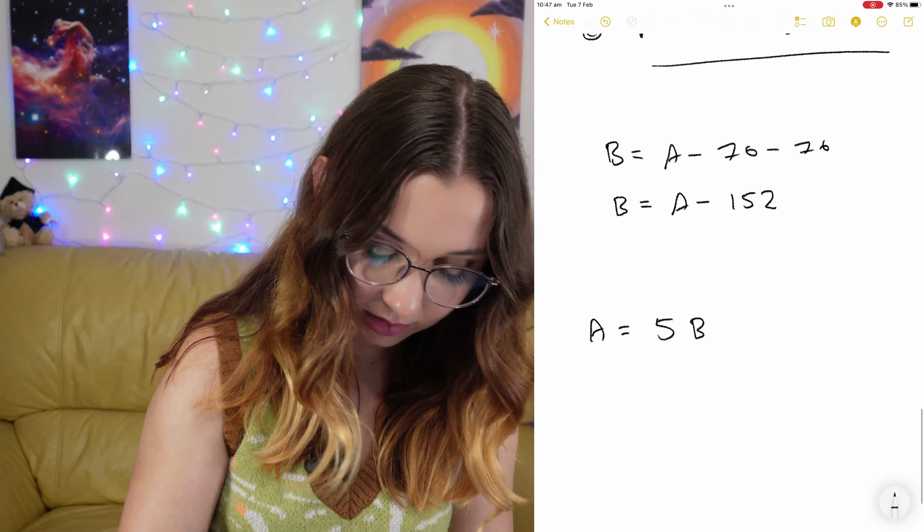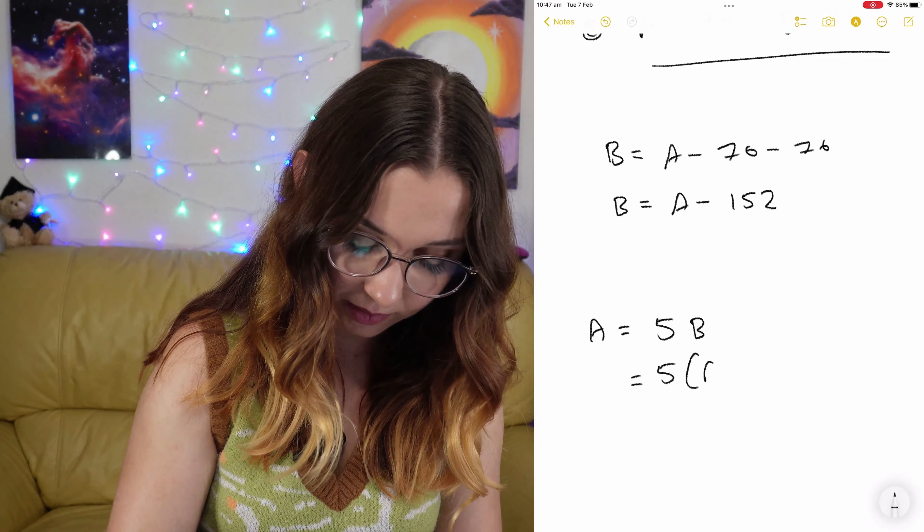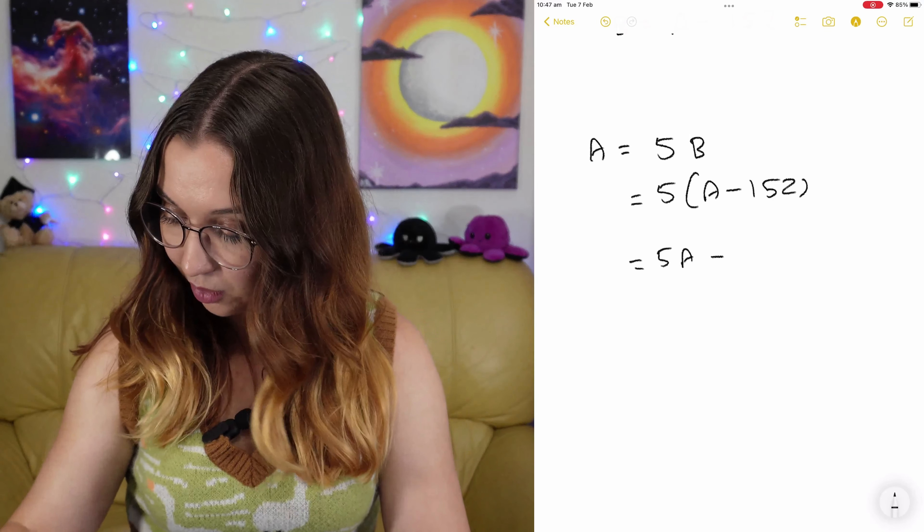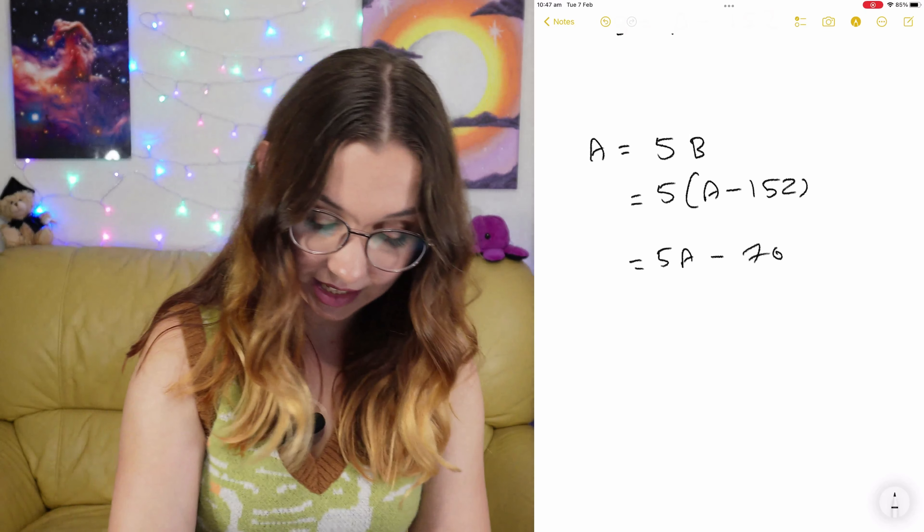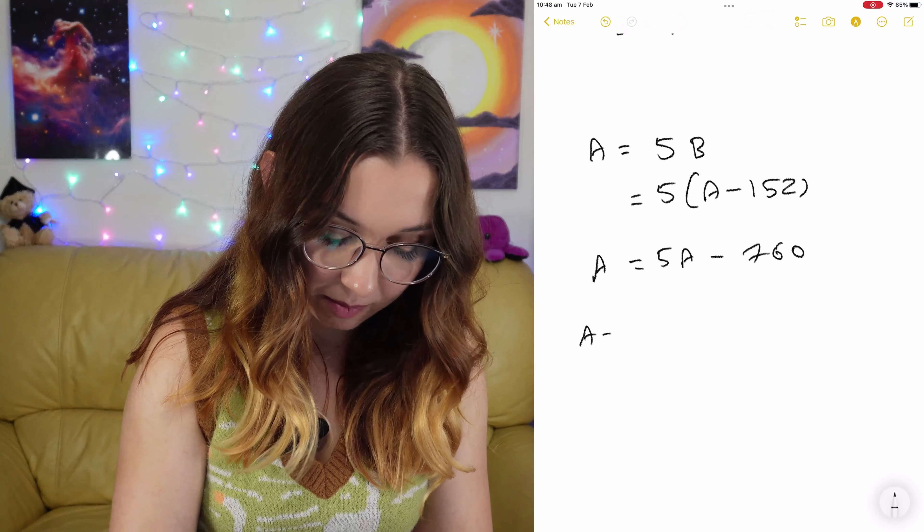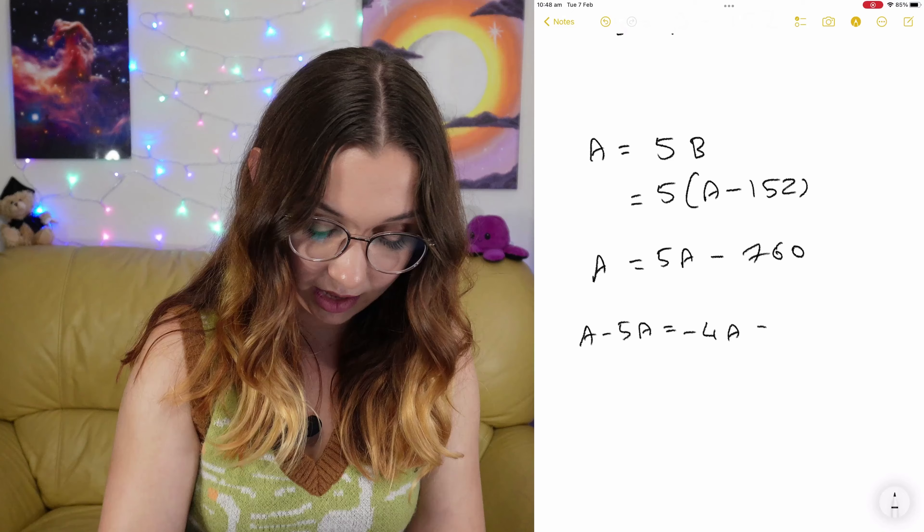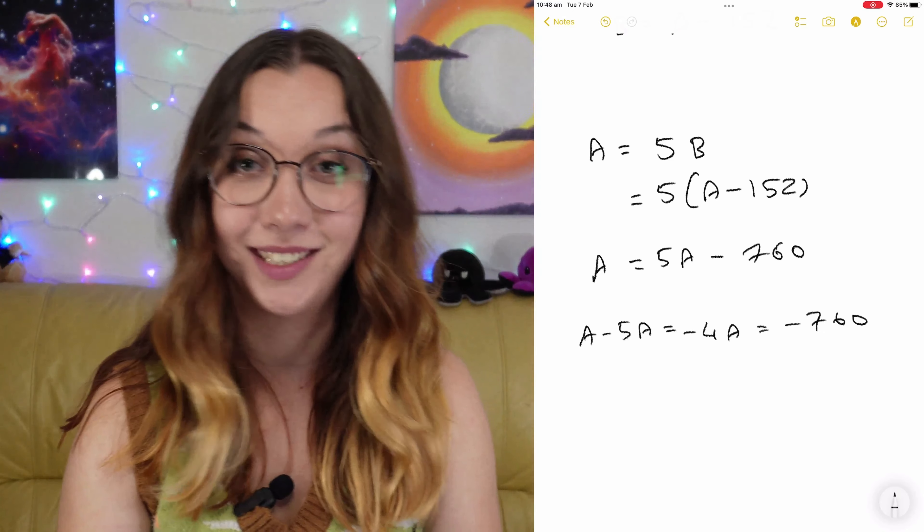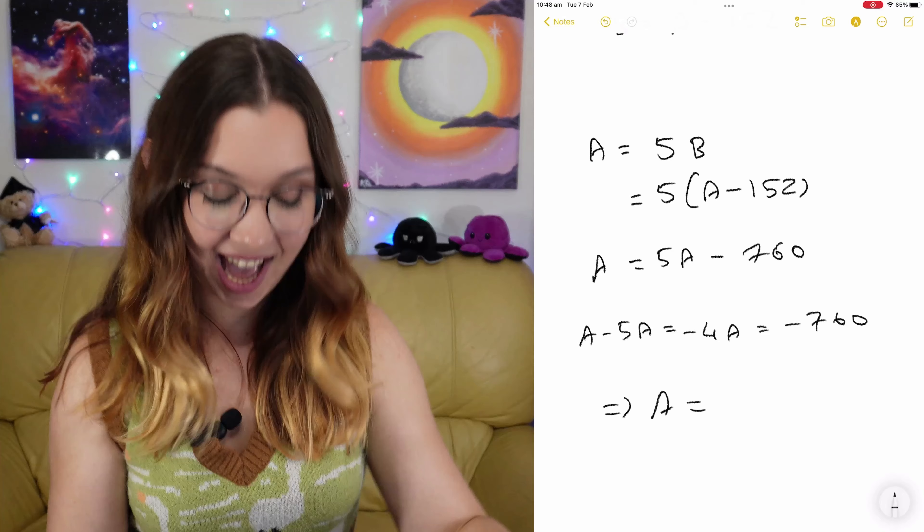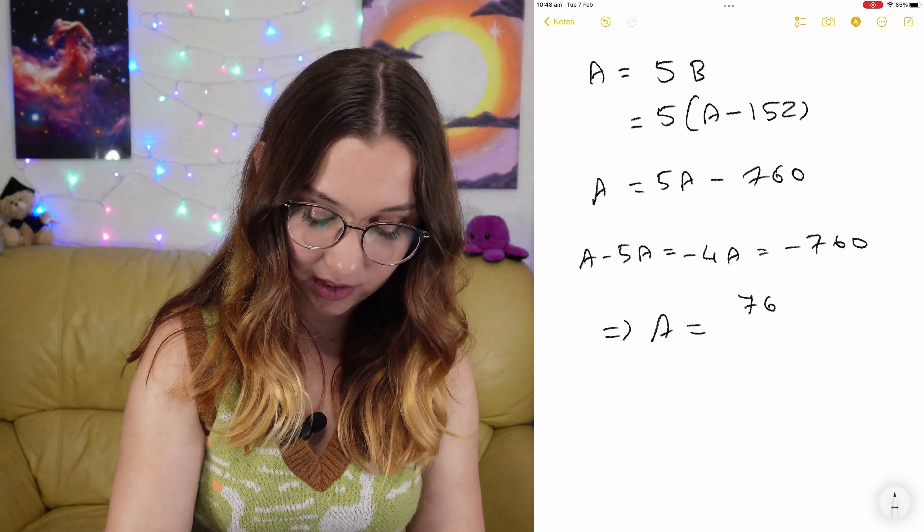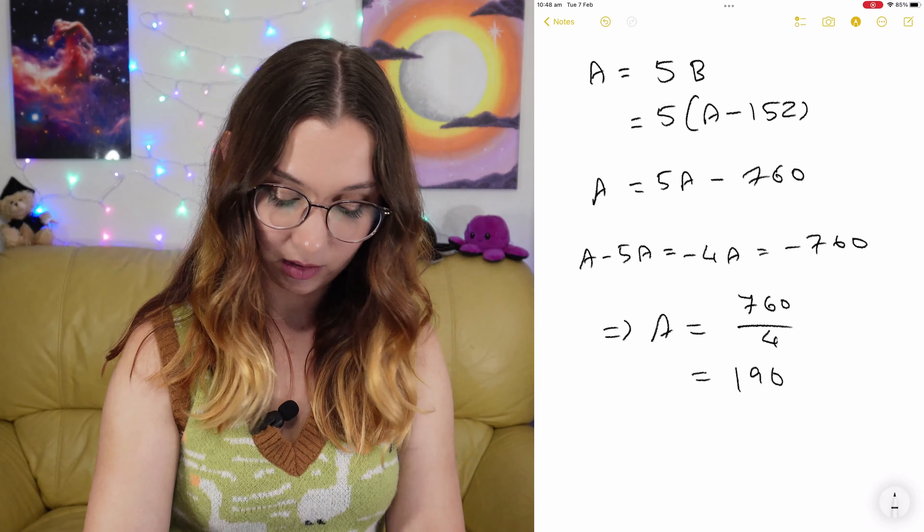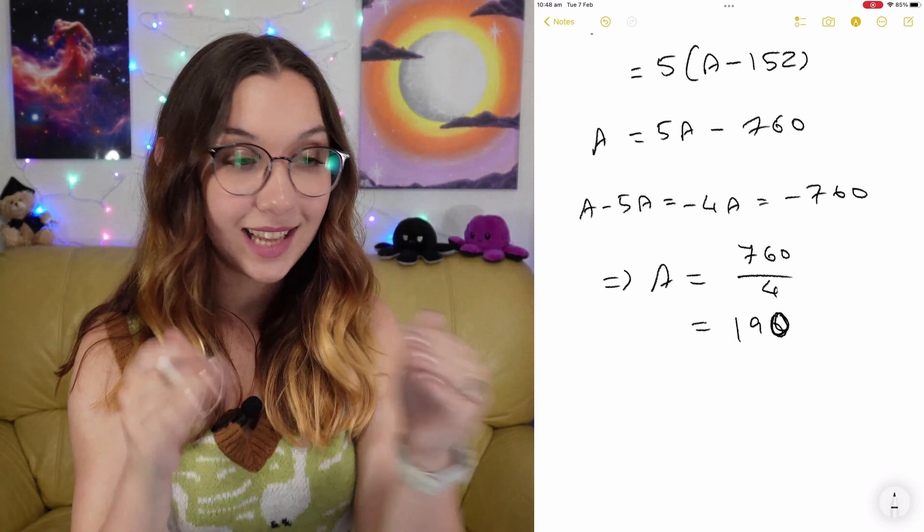So A is equal to 5B, which is equal to 5 times A minus 152. 5A minus 152 multiplied by 5 is 760. We're going to rearrange to make A the subject. A minus 5A is minus 4A equals minus 760. Therefore, the original number of pens in A must be 760 divided by 4, which is 190.